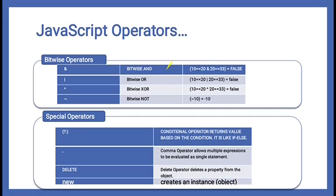Special operators: the conditional/ternary operator, comma operator (used for multiple expressions), delete (deletes a property from an object), new (creates a new object). Object keeps coming up — we will cover objects later. We use conditional statements to control program flow, because without conditions, controlling execution is not possible.